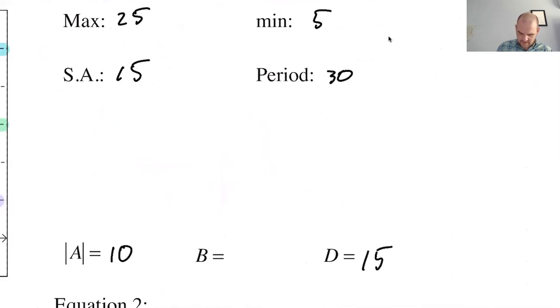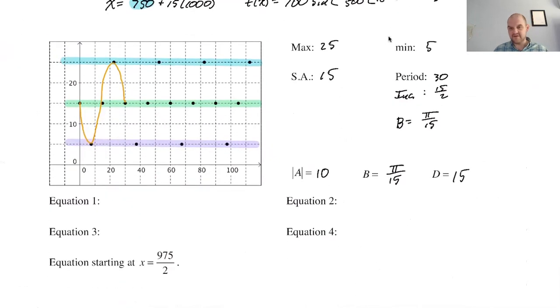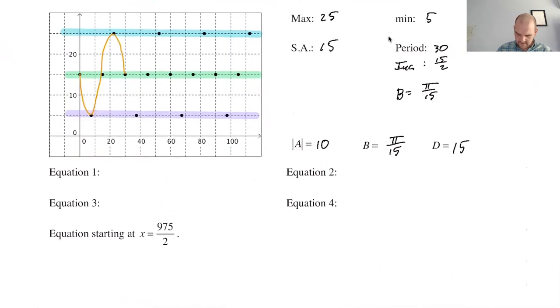The period was 30, so the increment was 15. So 30 over, so 15 over 2. And then B we said was π over 15. So just skipping over the explanation again because I'm keeping it in the video. It stays in the video.